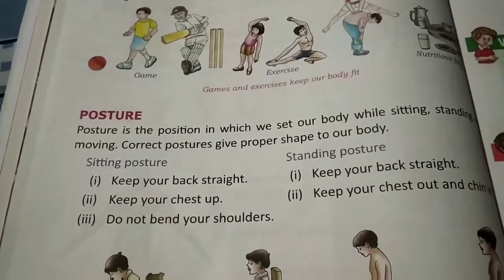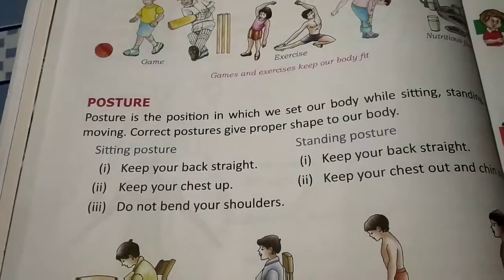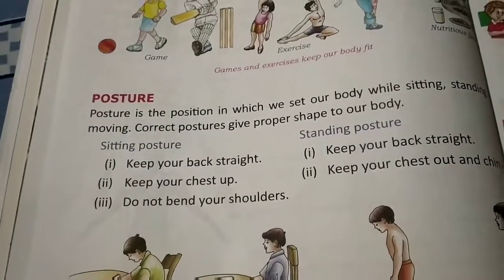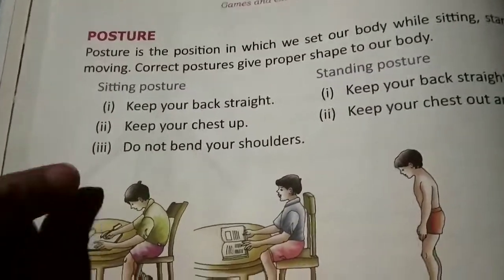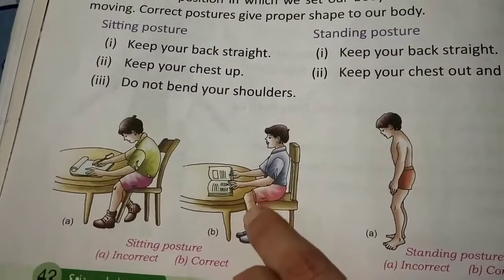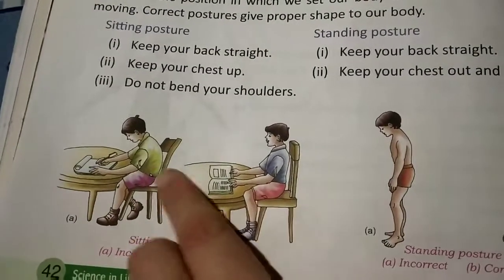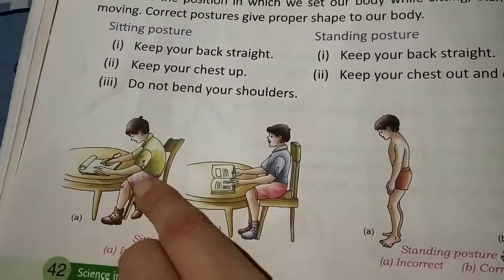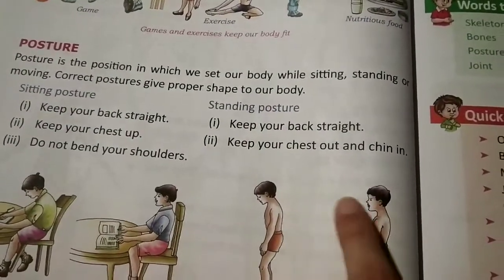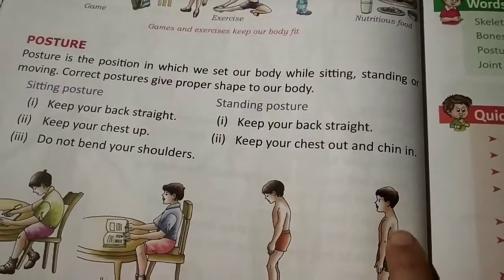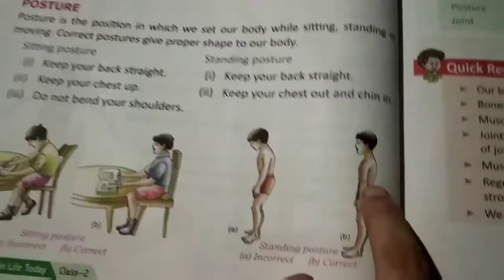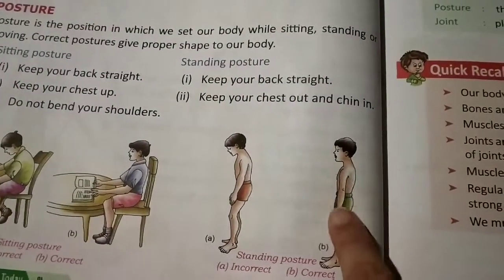The correct posture for sitting: if you are sitting on a chair, you should keep your back straight, keep your chest up, and do not bend your shoulders. There should be a 90-degree angle at your hips and a 90-degree angle at your knees. You should not sit in a slouched way. The correct standing posture is to keep your back straight, keep your chest out and chin in — not bent forward. That is the correct posture while standing.